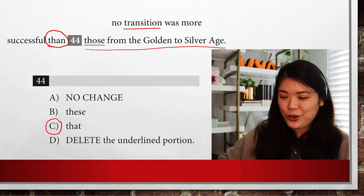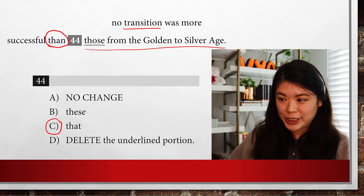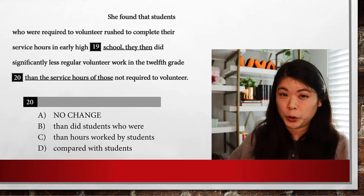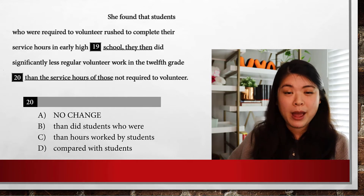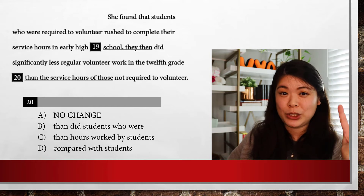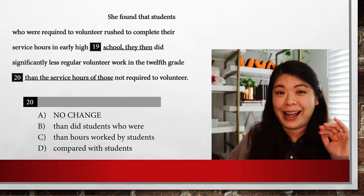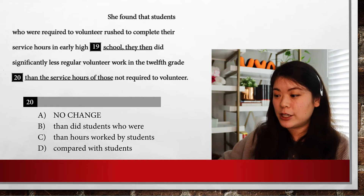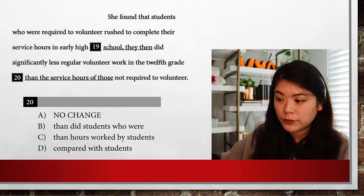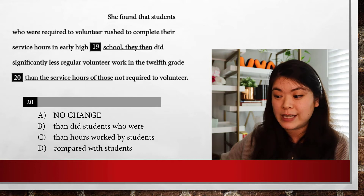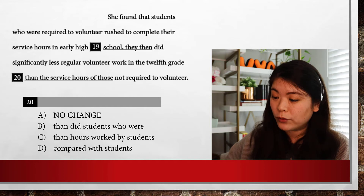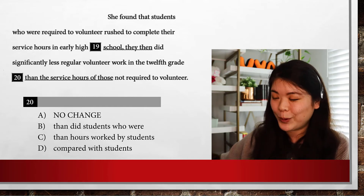Now let's take it up a notch and see if you can do it with a harder question. This next question came from the October 2018 SAT exam. When students first saw this question, there was a whole riot — most students were between two answers and they swore up and down that they are identical. But they're not, and I'm going to show you why. The sentence reads: She found that students who are required to volunteer rushed to complete their service hours in early high school. They then did significantly less volunteer work in the 12th grade than the service hours of those not required to volunteer.